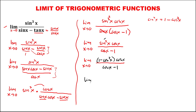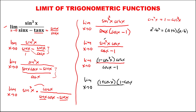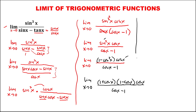We now have the limit as x approaches 0. Since a squared minus b squared equals (a plus b)(a minus b), we apply this to 1 minus cosine squared x, writing it as (1 plus cosine x)(1 minus cosine x), times cosine x, all over cosine x minus 1.